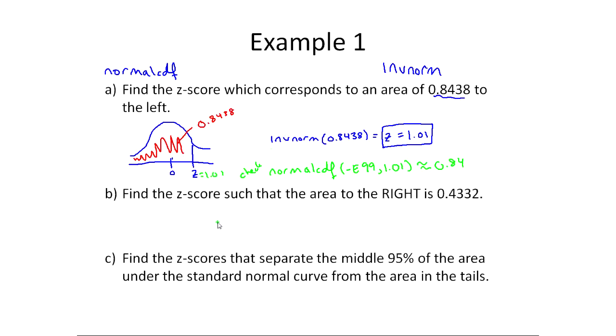What about area to the right? I just told you that all this deals with is area to the left. Well, let's draw the picture first. We're dealing with z, so it's normal with mean of zero. Area to the right is 43%, well, the area to the right of zero is 50, so we've got to be a little further over than that, so a little smaller than 50%. This right here would be 0.4332.